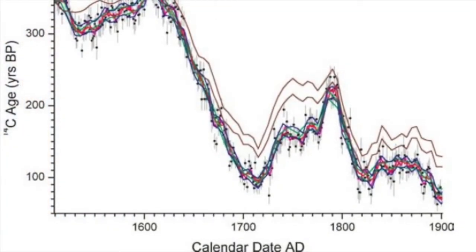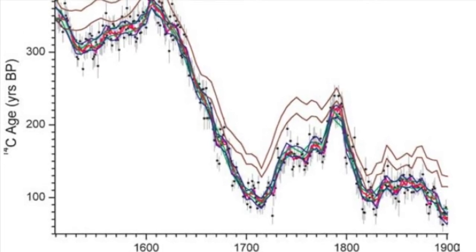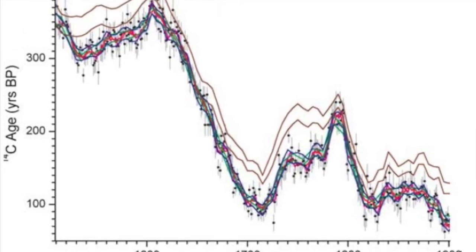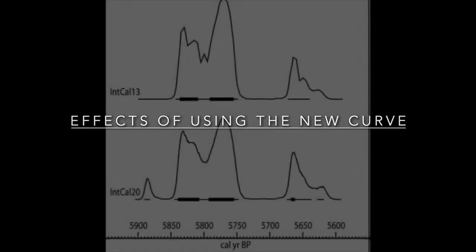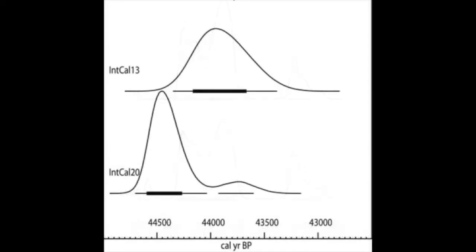A new statistical model was used to construct the actual calibration curve based on these records. For the recent period, the effects of using IntCal20 are minimal for the most part. For older radiocarbon dates, the shift in calibrated ages can be up to several hundred years.